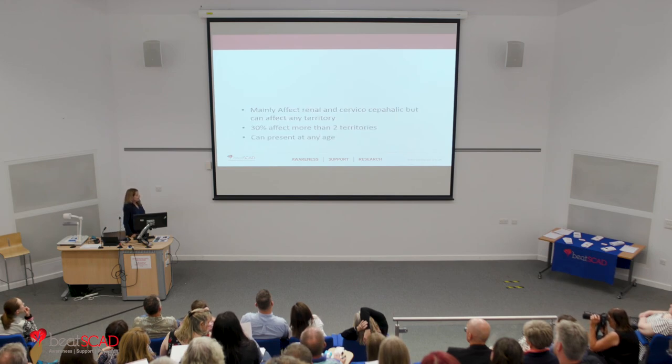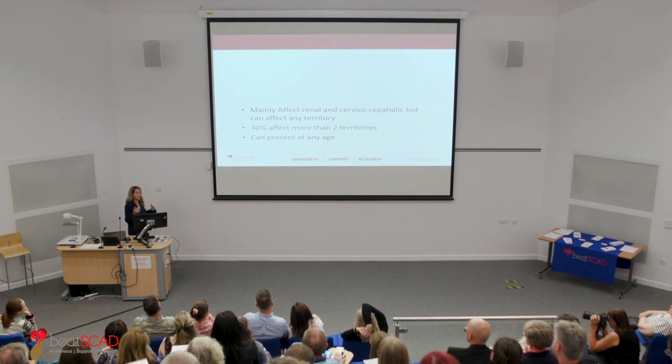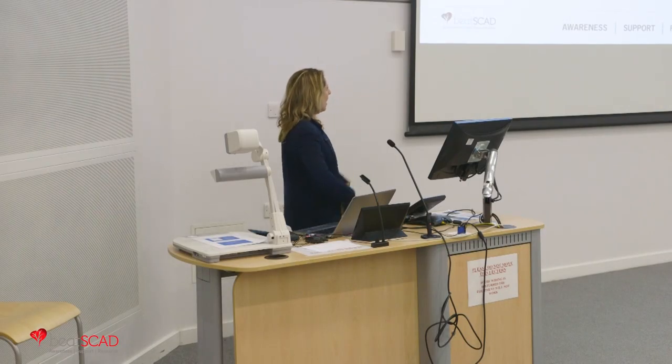FMD mainly affects the renal and cervical cephalic arteries but can also affect any area. In 30% of patients it tends to affect more than one area — so people with FMD in the renal arteries may also have FMD in the iliac arteries or in the neck. It can present at any age, with case reports documenting FMD in children, young women and men, and also in the elderly.